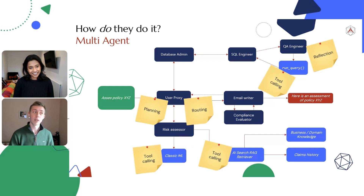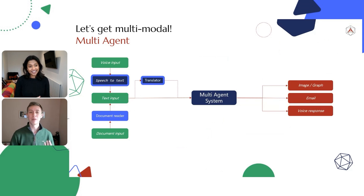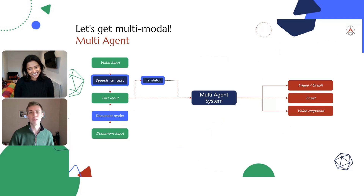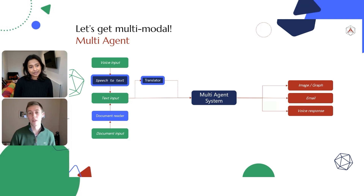You can even start getting multimodal with it. Take that multi-agent system — you don't just have to have text input. Maybe you want voice input with speech-to-text, pass it to a translator, or pass in a PDF or document needing OCR. Likewise, maybe your agent decides the output is best as an email, needs to generate an image or a graph, or needs to do text-to-speech on the other end. There are loads of different options there as well.